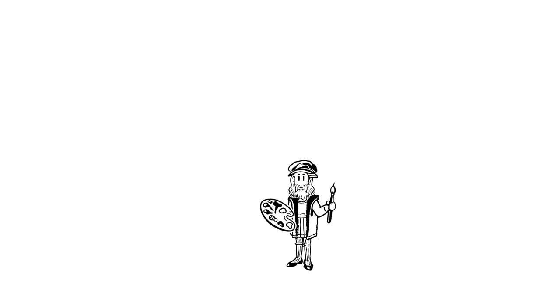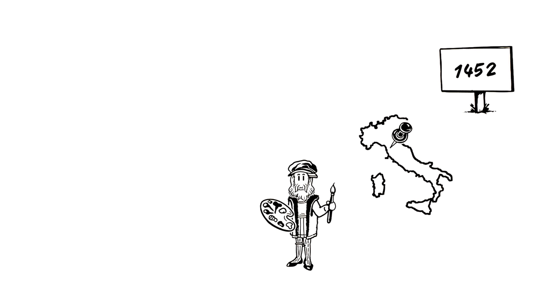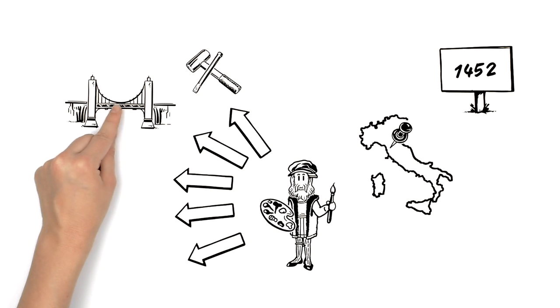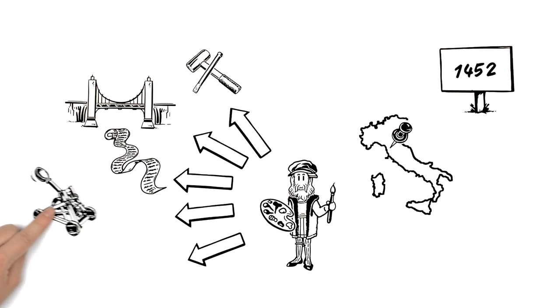The celebrated painter and inventor was born in 1452 in Vinci, Italy, and those were only two of his many talents. He was also a sculptor, architect, philosopher, engineer, and scientist.